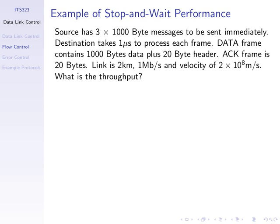All we've done in this example is increased the data size from 1,000 up to 10,000. Increasing the data size increased our throughput and efficiency, because we spend more time sending real data as opposed to sending header and waiting. In the opposite direction, if you decrease the data size relative to everything else, the throughput will go down.